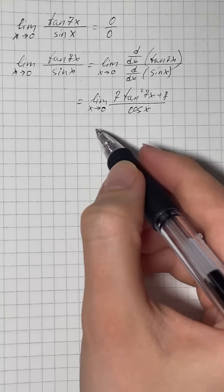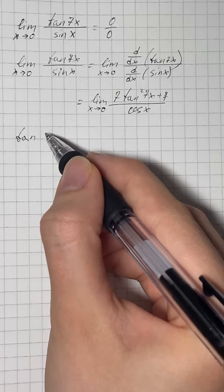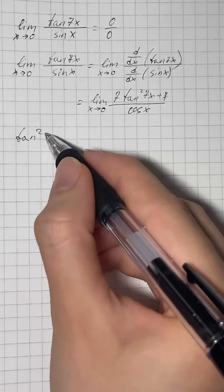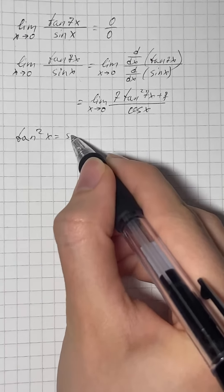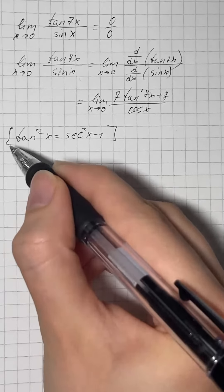As we know that tangent squared of x equals secant squared of x minus 1, so we're going to use it.